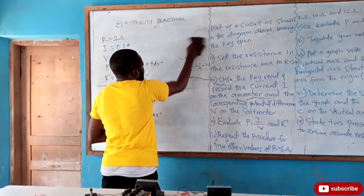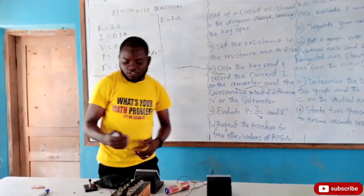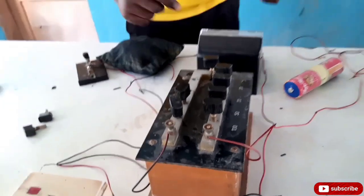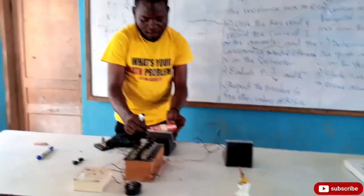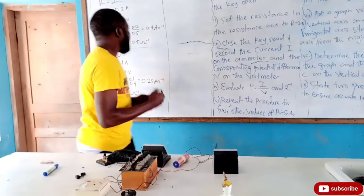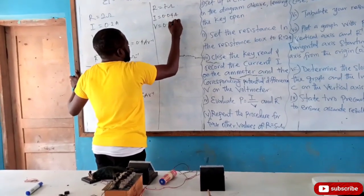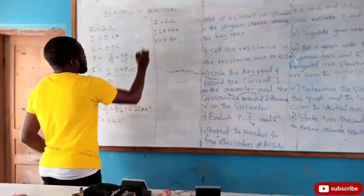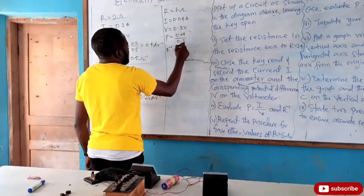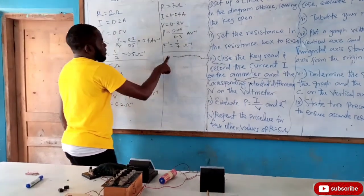When R equals 7 ohms, I take my reading. My voltage is 0.3 volts and my current is 0.04 amperes. So I = 0.04 A and V = 0.3 V. P equals 0.04 divided by 0.3, which gives 0.133 amperes per volt. R⁻¹ equals 1 over 7, which is in per ohms. I can now go to the next reading.